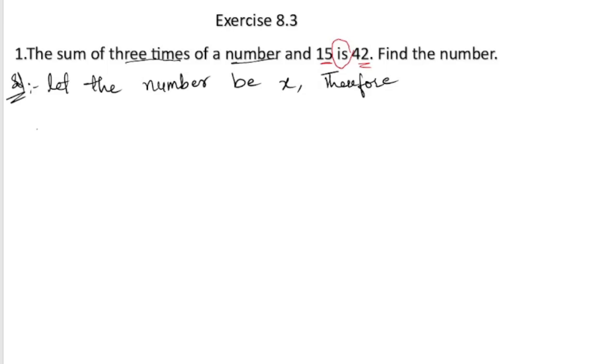...three times of a number, so three times of a number is 3 times x. Sum means plus 15, plus 15 equals to 42.